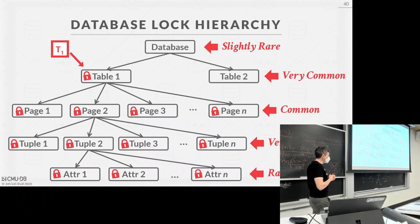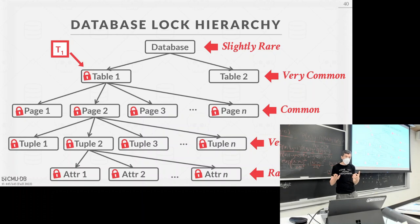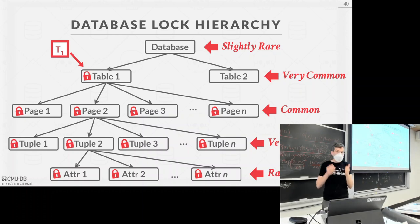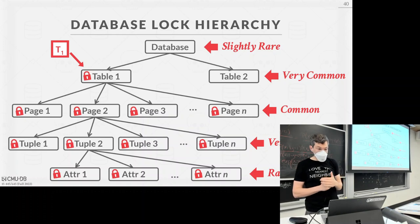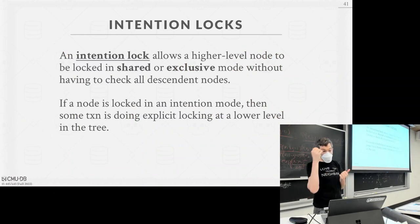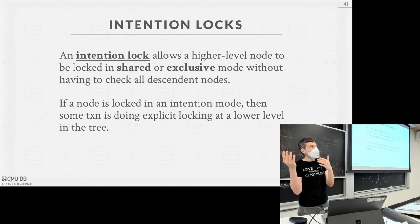Not every system will support this full hierarchy. If they support two-phase locking, at the very least they'll support tuple-level locks, and probably table locks too. Database-level locks are rare. Page locks are common but not ubiquitous — Postgres doesn't support page locks but MySQL does. Attribute locks are super rare — that's very fine-grained. The only system I know that does attribute locks is YugaByte. Everyone has to follow the same protocol, going from the top acquiring locks on the way down.